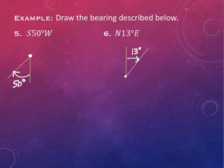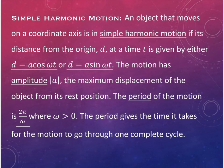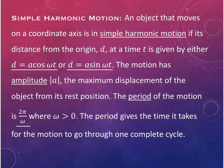The last application in this section is simple harmonic motion. An object on a coordinate axis is in simple harmonic motion if its distance from the origin d at time t is given by either d equals a cosine(ωt) or d equals a sine(ωt). The motion has amplitude a - the maximum displacement from rest - and the period is 2π divided by ω.